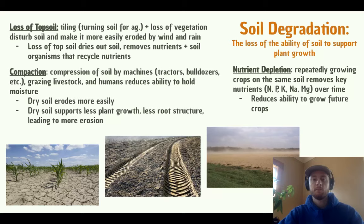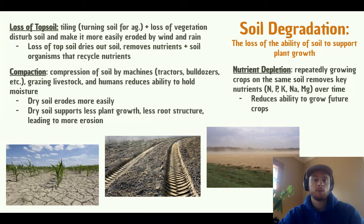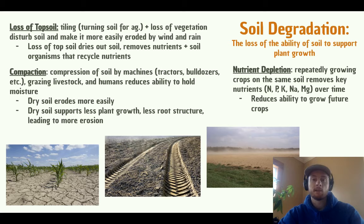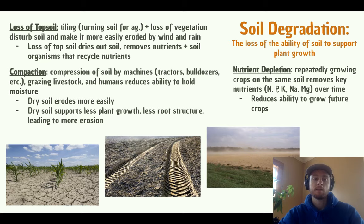Soil degradation is the loss of the ability of soil to support plant growth. One common cause is the loss of topsoil. Tilling — turning the soil for agriculture — disturbs the soil and makes it much more easily eroded by wind and rain. The loss of vegetation also makes soil more prone to erosion because plant roots are important stabilizing structures. Losing topsoil has many negative effects: it dries out the soil by removing that moisture-trapping organic layer, it removes the nutrients contained in the topsoil, and it eliminates the organisms that are recycling nutrients — really a triple whammy.